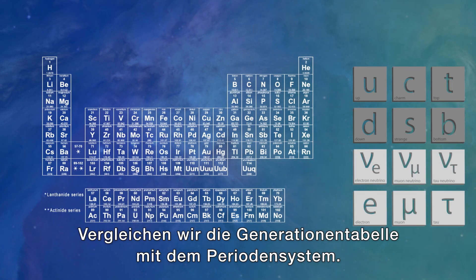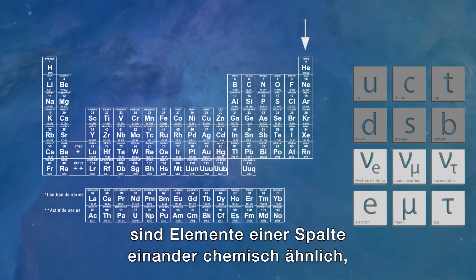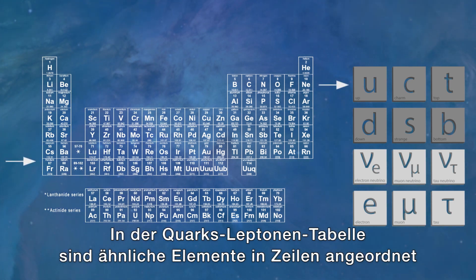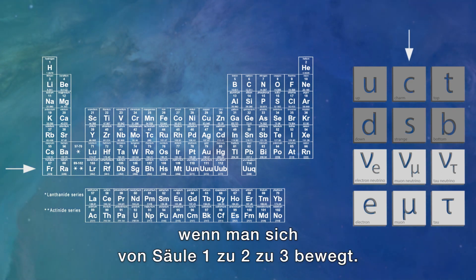We can contrast the quark and lepton periodic table with a chemical one. In the chemical table, columns are chemically similar, and moving down the rows means more mass. While in the quark and lepton version, the rows are similar particles, with the mass increasing as you go from column 1 to 2 to 3.